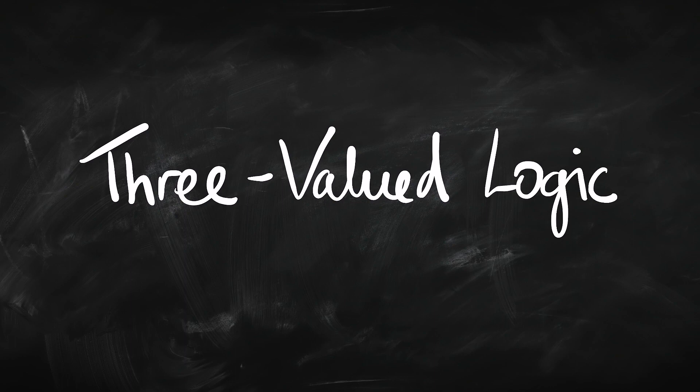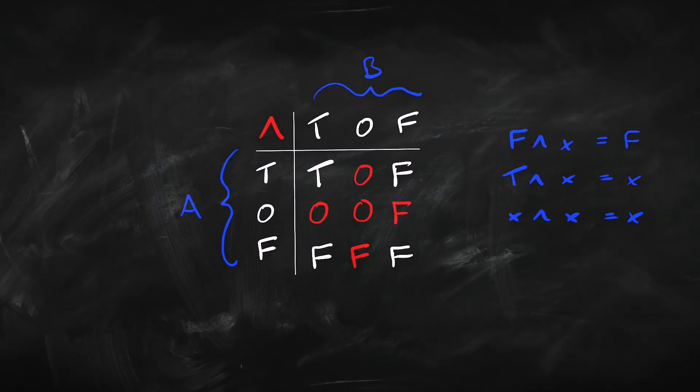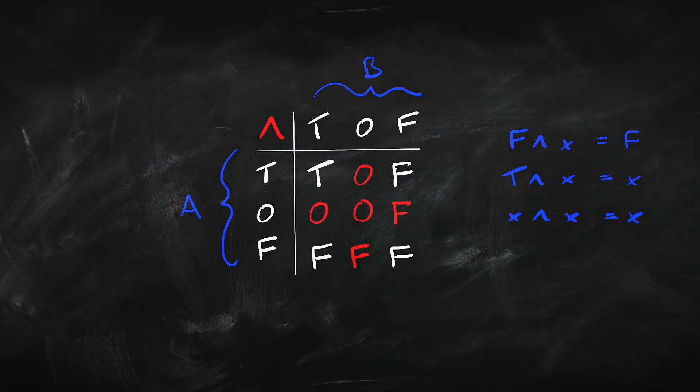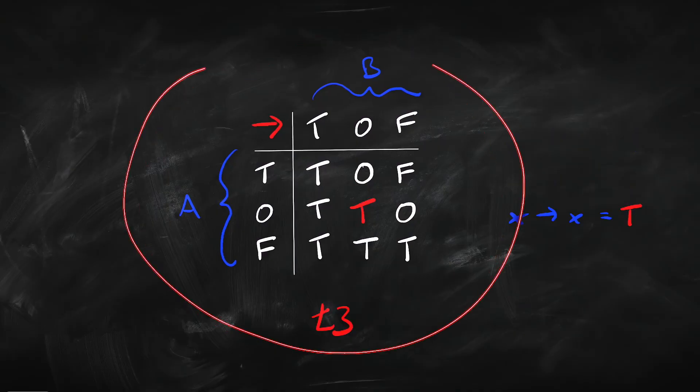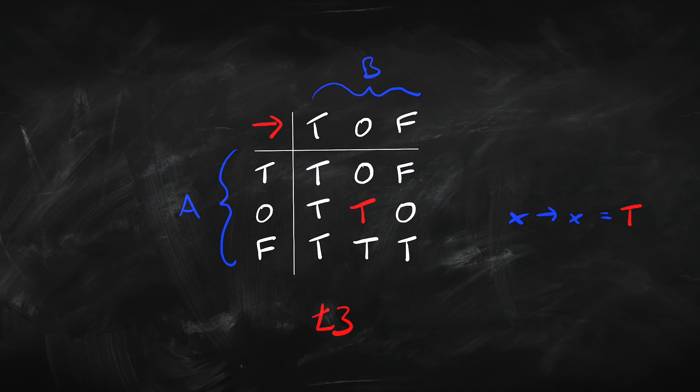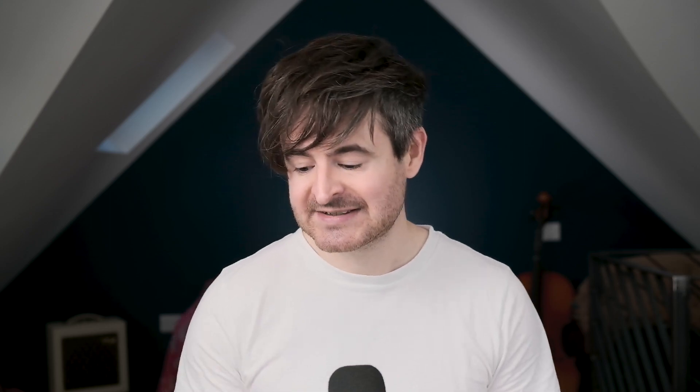We are continuing talking about three-valued logics. In the previous video, we looked at how to extend our truth tables for the connectives — not, and, or, if-then — to the three-valued case. So how do we make sense of them when we've got this third truth value, 'other,' floating around?